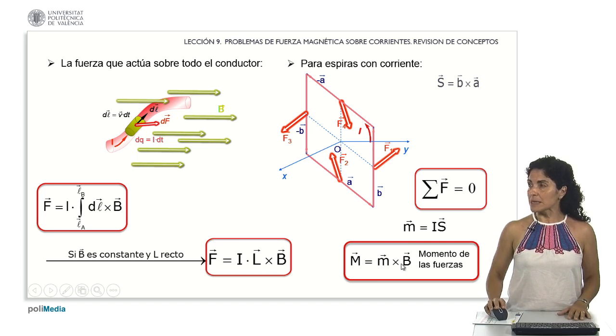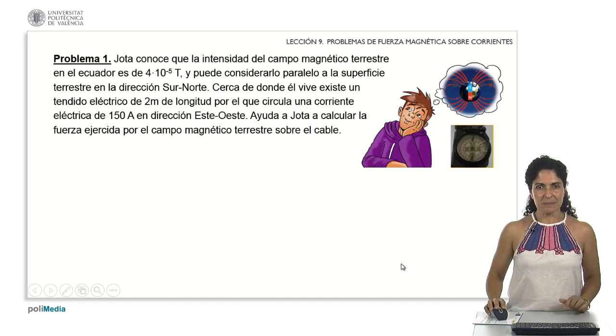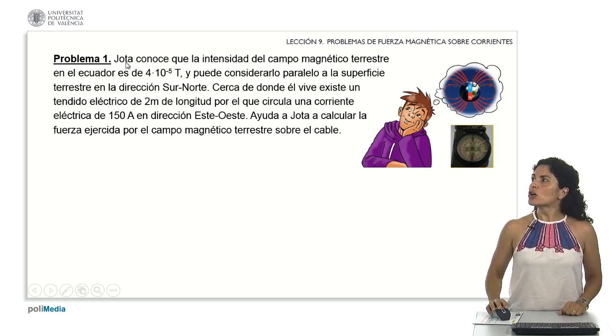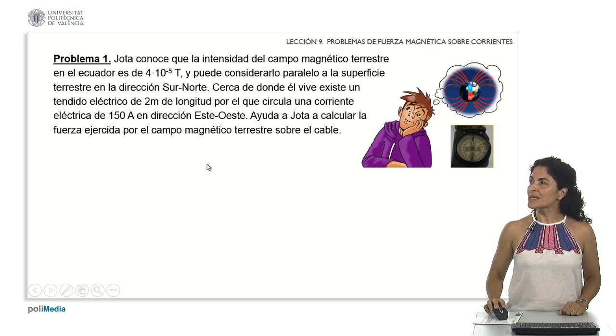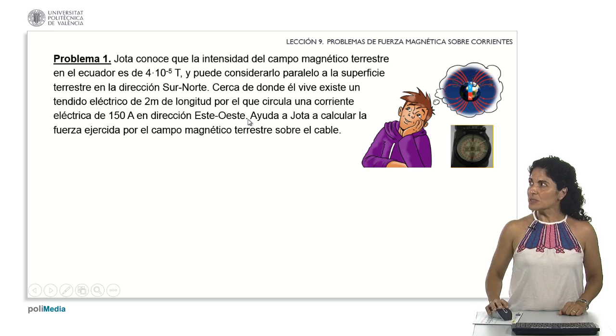Let's initiate our analysis by applying these concepts to our first problem. The first problem states that Jota is aware that the intensity of the Earth's magnetic field at the equator measures 4 times 10 to the power of minus 5 teslas. It can be assumed to align parallel to the Earth's surface in the south-north direction. In proximity to where he lives, there exists a 2 meter long power line with a current of 150 amperes flowing in the east-west direction. Help Jota in calculating the force exerted by the Earth's magnetic field on the wire.